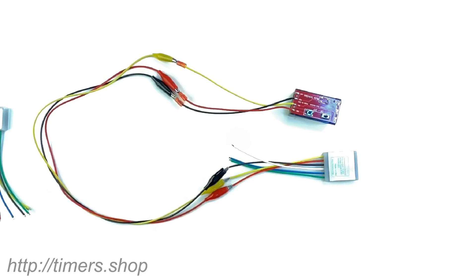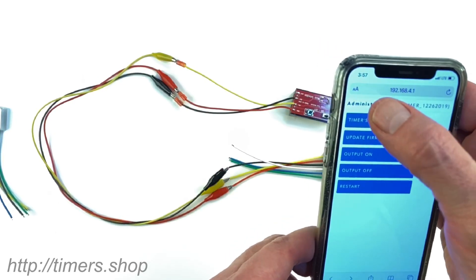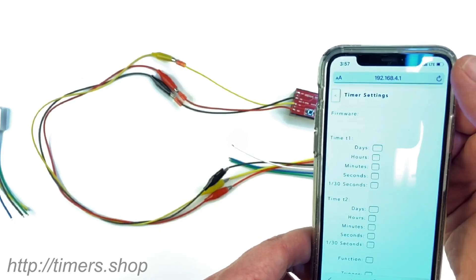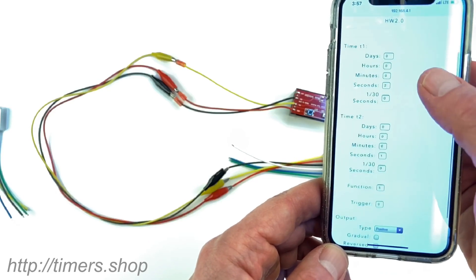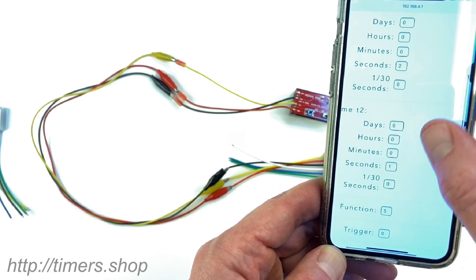I'm just going to do it quick on the phone. Timershop connects and then I'm going to refresh this page and go to timer configurations. You can see that it saved our two second on and one second off.